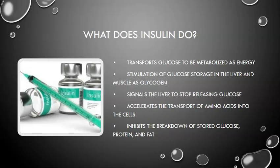So what does insulin do? It transports glucose to be metabolized as energy. The liver produces glucose and the pancreas produces insulin — they work together to maintain and provide energy to the body. Insulin stimulates glucose storage in the liver so muscles can use it, signals the liver to stop releasing glucose, accelerates amino acid transport into cells, and inhibits the breakdown of stored glucose, protein, and fat.